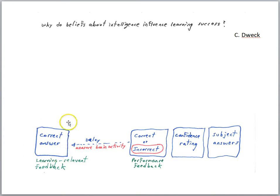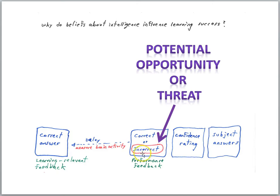After this delay, they get learning-relevant feedback. So if they got the incorrect answer, they're going to be able to get the correct answer — in other words, learning could take place. Notice though, when they get the answer wrong, we might think of this in two different ways. If you get the answer wrong, you could see it as a potential opportunity to get it right, or you might see it as a threat — maybe that says something bad about me. So scientists were interested in whether people with different mindsets might have brains that are responding differently to the negative performance feedback, and whether one mindset or another makes it easier to learn information after getting negative performance feedback.